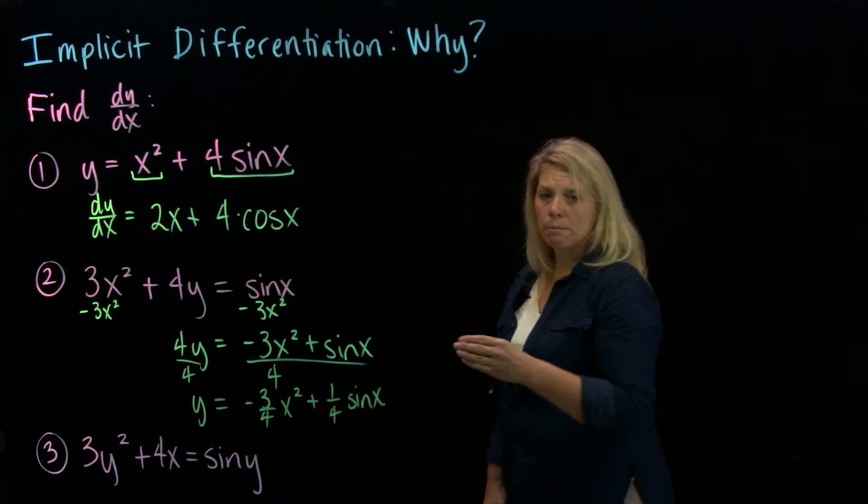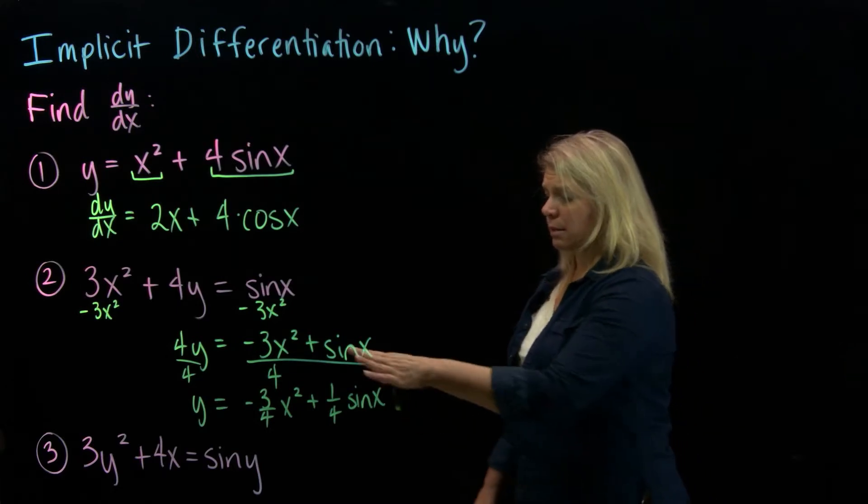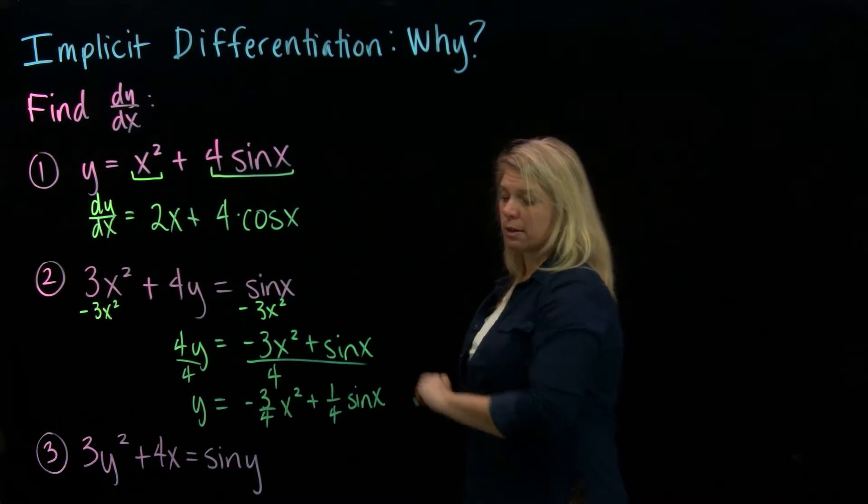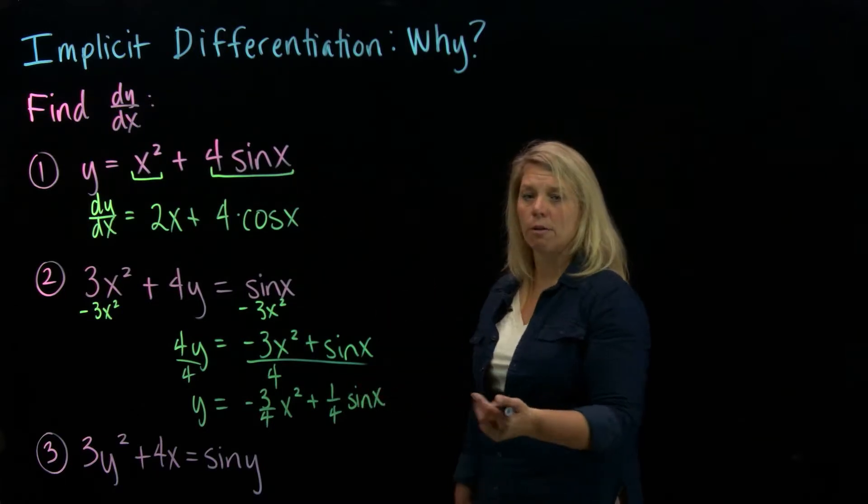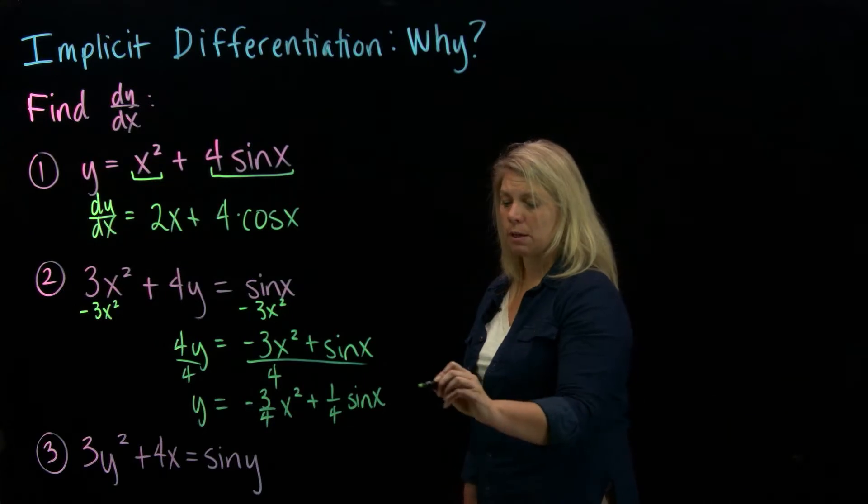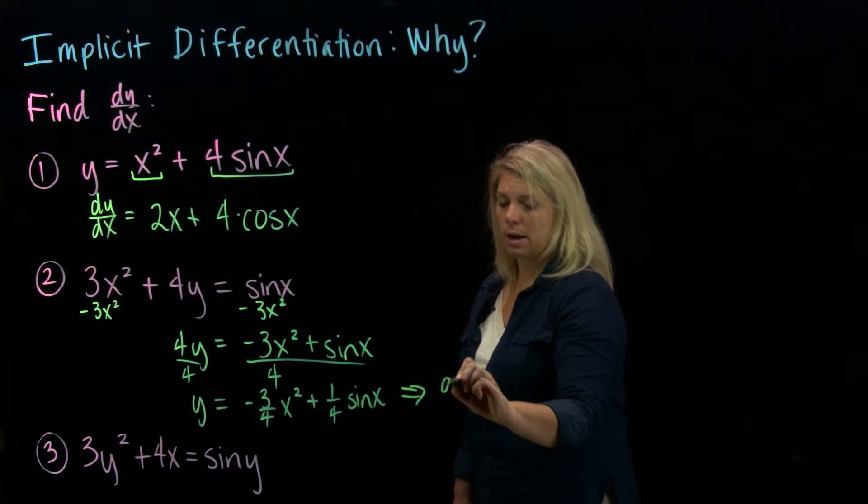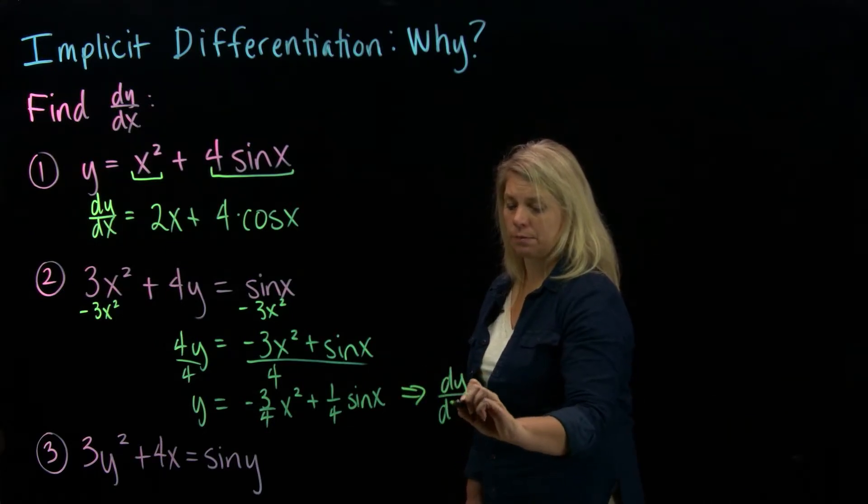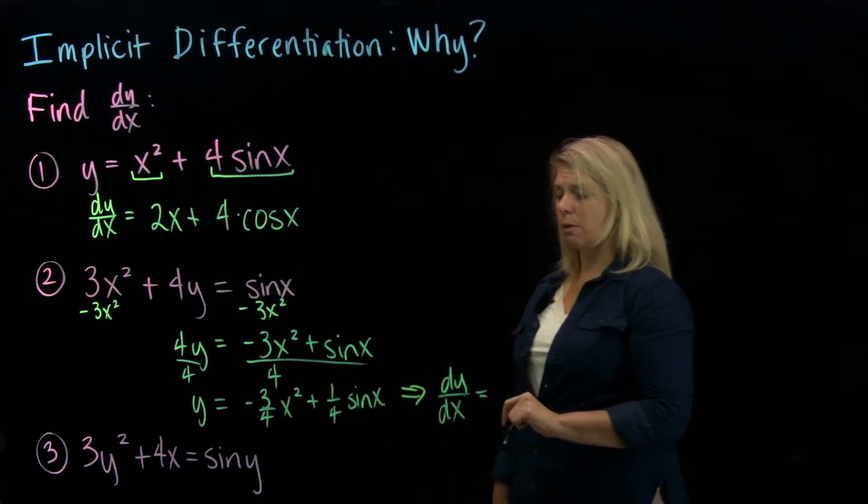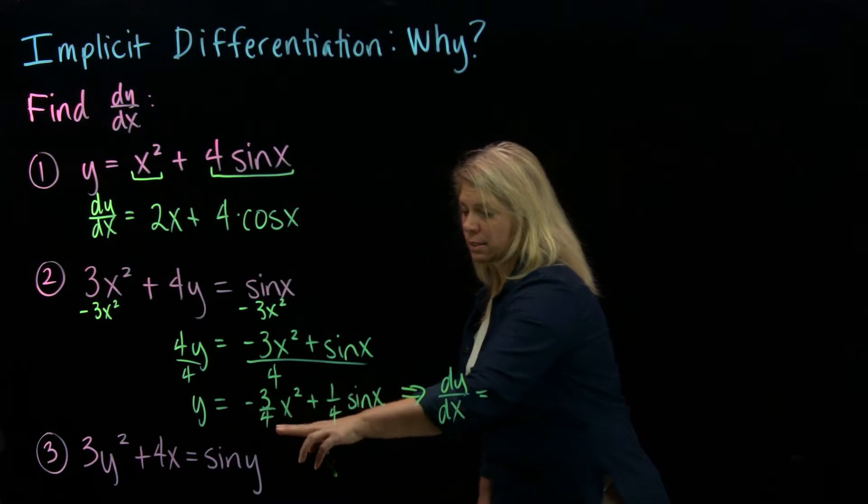And so at that point, I've just done algebra to solve for y, but now I want to find dy/dx. But now this problem is not much different than the previous problem. I have some different coefficients to deal with, but pretty much it's similar to the previous problem. So I can find dy/dx equals, I'm just going to bring down the exponent and subtract 1. So I'll have negative 6 fourths, which reduces to negative 3 halves x plus,